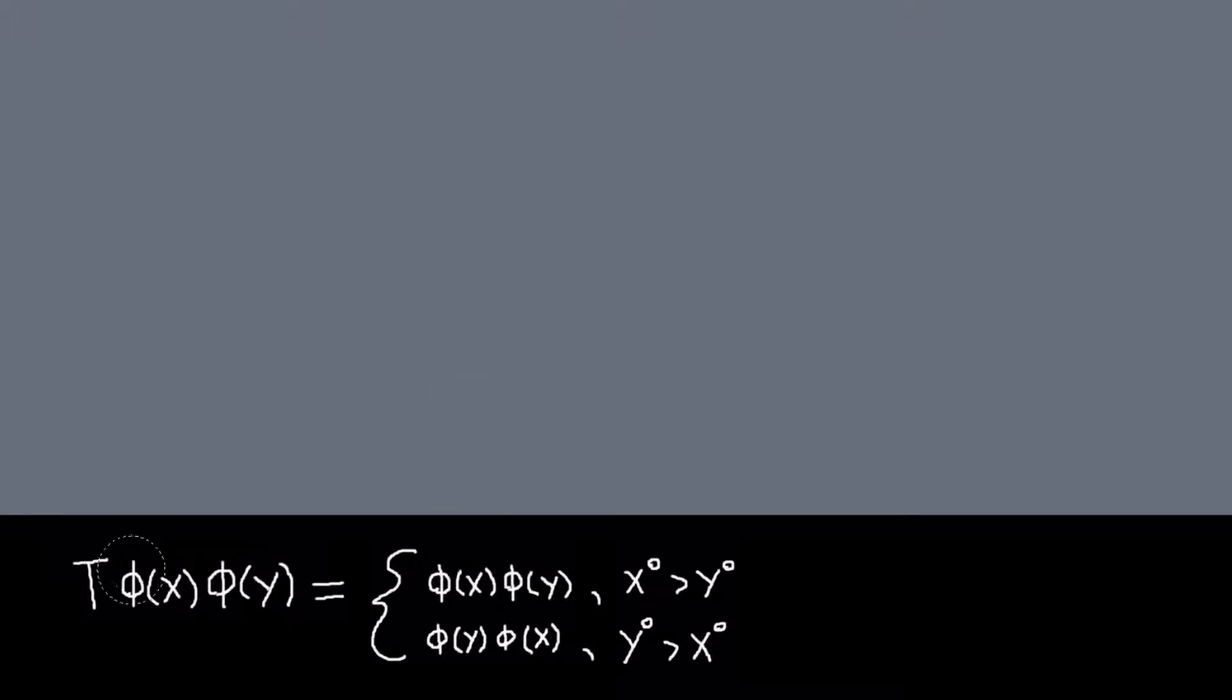So basically all it is, is we introduce this operator T, and when you act it, for example on a pair of operators, it just orders them according to basically the time that they act. So basically if x^0 is greater than y^0, so if the time of x is later than the time of y, you put it on the left, otherwise it's the opposite.